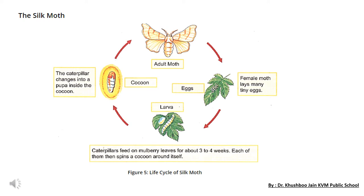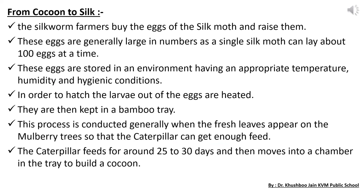The silk worm covers itself with silk fiber, and after that it changes into the next stage — pupa. When the silk worm is fully covered, this covering is called the cocoon. The silk worm continues to develop as pupa inside the cocoon to eventually form the silk moth. For the production of silk, the silk worm developing inside the cocoon is not allowed to mature into an adult silk moth. As soon as the cocoon is formed, it is used to obtain silk fiber.